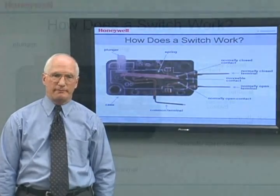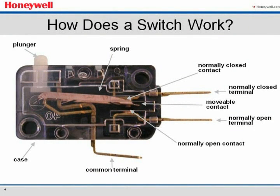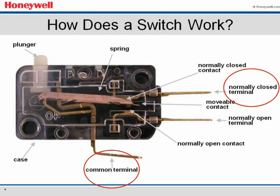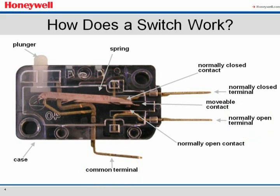So how does a switch work? This shows the inside of a switch. With the plunger in the released or free position, the common contact is against the normally closed contact. In this condition, the normally closed circuit of the switch can carry current. This means there is electrical continuity between the common terminal and the normally closed terminal. The common terminal is electrically insulated from the normally open terminal. As the plunger is depressed, it reaches the operating point. The distance between the free position and the operating point is called the pre-travel.